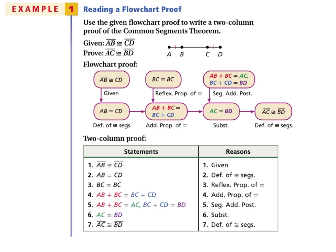Steps four and five: AB plus BC equals BC plus CD by the addition property of equality. Then AB plus BC equals AC, and BC plus CD equals BD by the segment addition postulate. So AC equals BD by substitution, and finally AC is congruent to BD by definition of congruent segments.